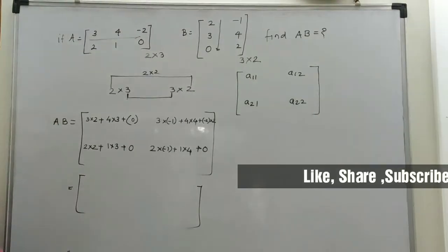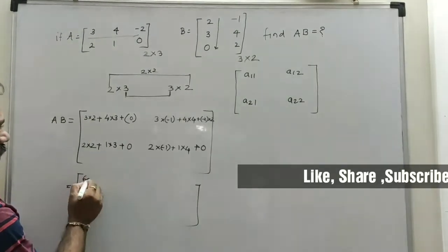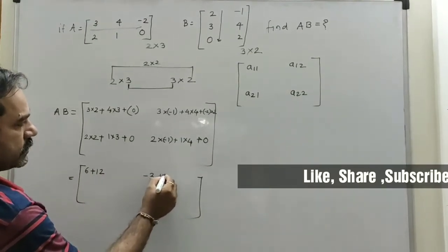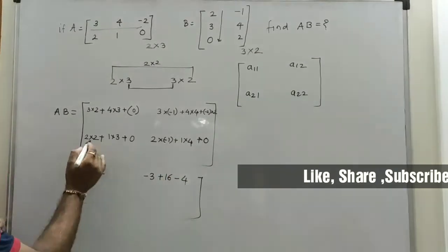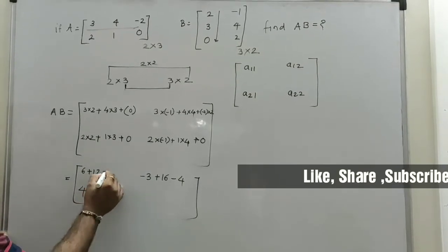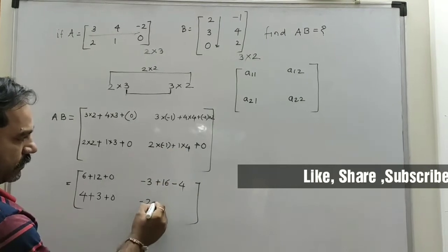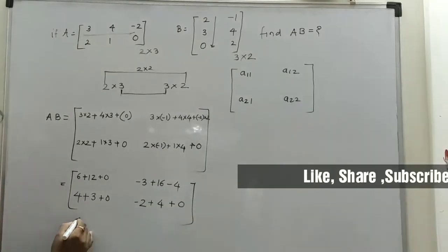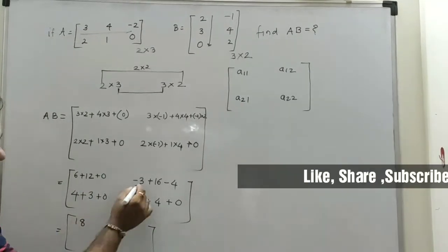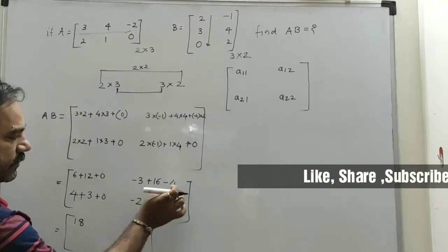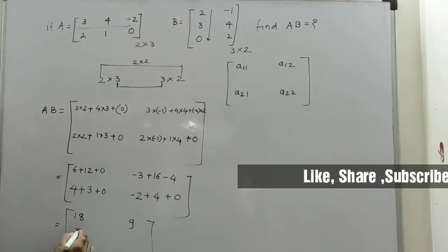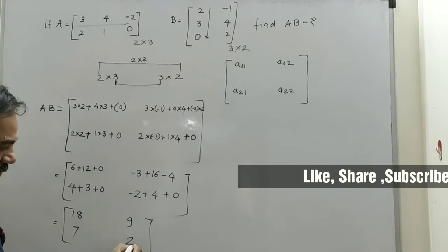By solving we get: 3 into 2 is 6 plus 12 is 18, minus 3 plus 16 is 13, minus 4 plus 3 is minus 1, and minus 2 plus 4 is 2. So we get 18, minus 3 minus 4 is minus 7 so it is 9, 4 plus 3 is 7, minus 2 plus 4 is 2.